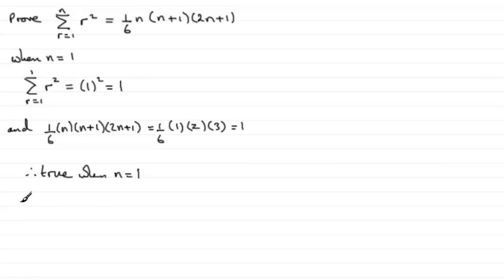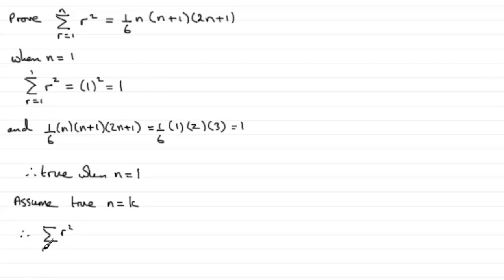Now we need to assume that it's true for some particular value of n. Assume true for n equals k. That means we can say that the sum of r squared going from 1 to k equals one sixth k multiplied by k plus 1 multiplied by 2k plus 1.